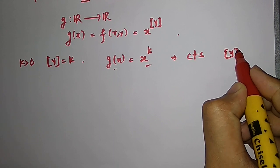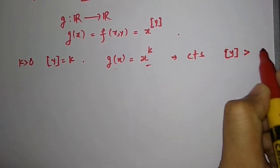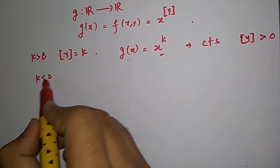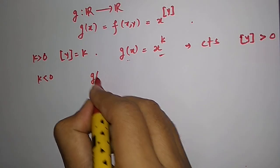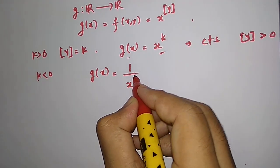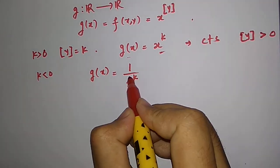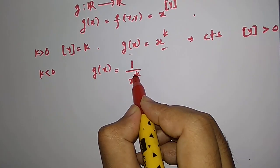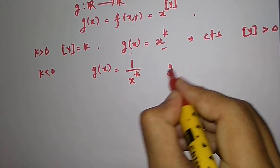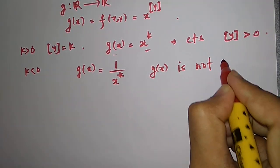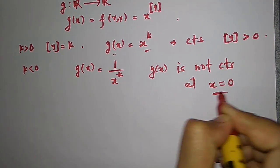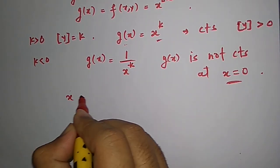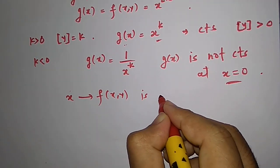Now what happens if the greatest integer part of y is strictly negative, that is k < 0? In that case our function looks like 1 / x^(−k), where −k is positive. In that case g(x) is not continuous at x = 0, because the function is not even defined there. So the function x → f(x, y) is continuous for all x except possibly at x = 0.